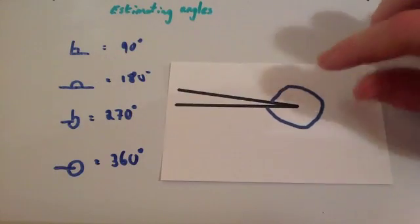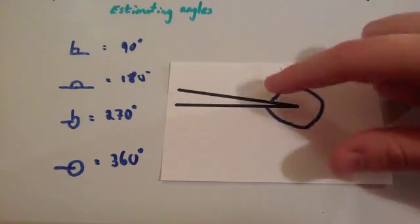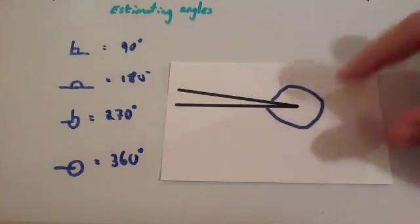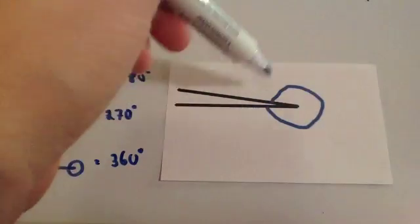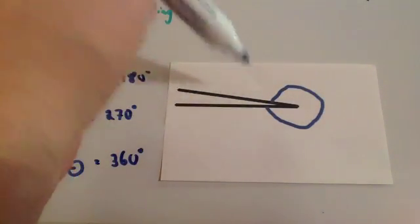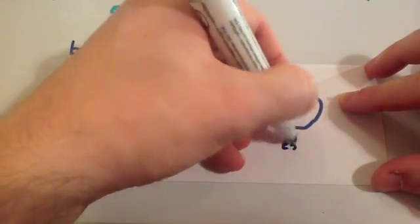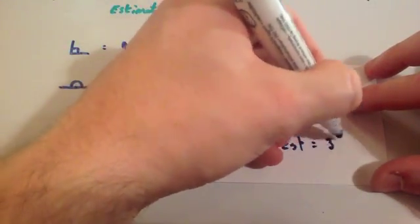Okay, this time, you've got a reflex angle. As you can see, it's much bigger than a straight line. The angle goes all the way around. And you've just got left this part that's not the angle. So as a full circle is 360 degrees, or a full turn is 360 degrees, this is just a bit less. So my estimate for this would be somewhere in the region of 350 degrees.